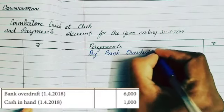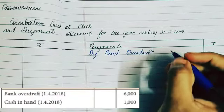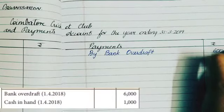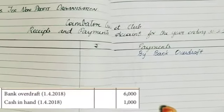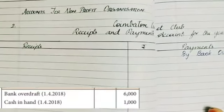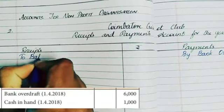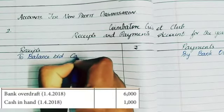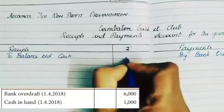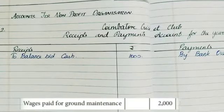Next we have cash in hand. This is a normal cash balance, so go to the receipts side and record it. Write 'Balance Brought Down — Cash' for 1,000 rupees.